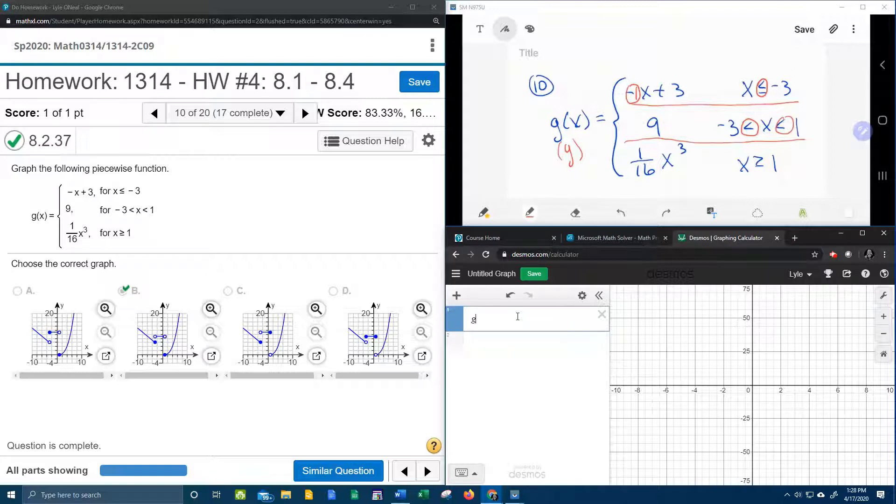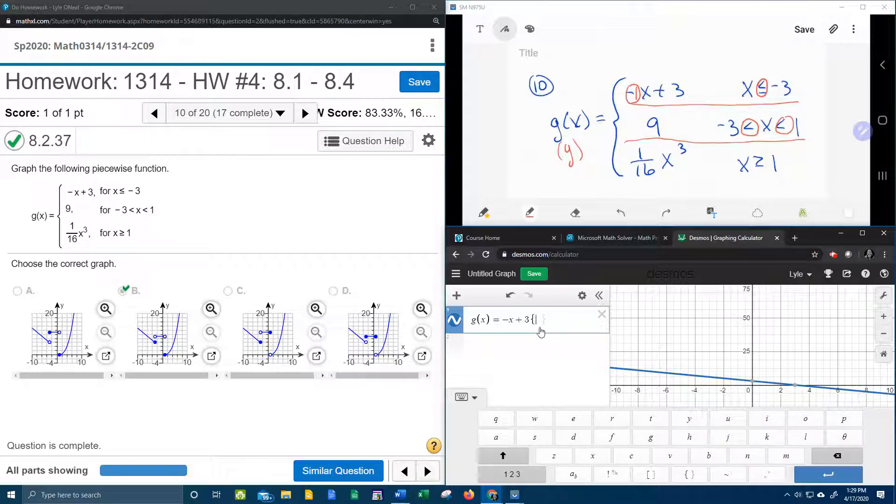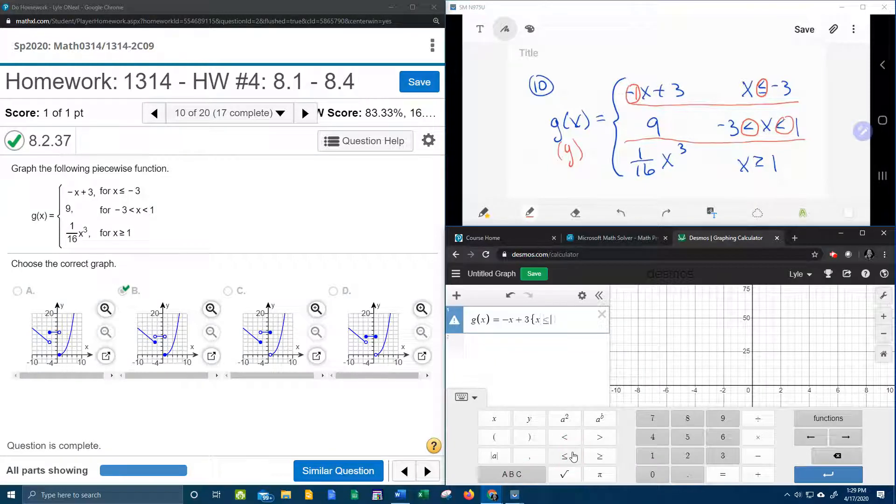we're going to say g of x equals, we're going to type in the top piece of the function, which was negative x plus 3, and then to do the restriction, the x is less than or equal to negative 3, in our Desmos keyboard, we're going to click on the ABC button and choose the braces. And then we're going to say x is less than or equal to negative 3, enter.